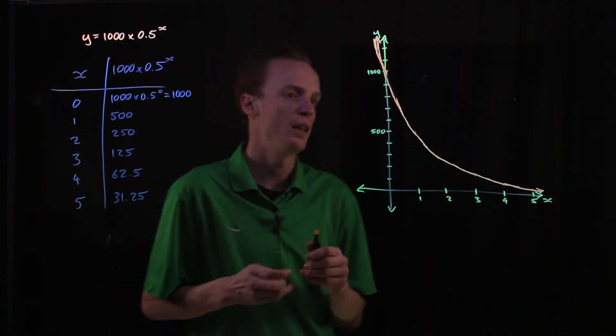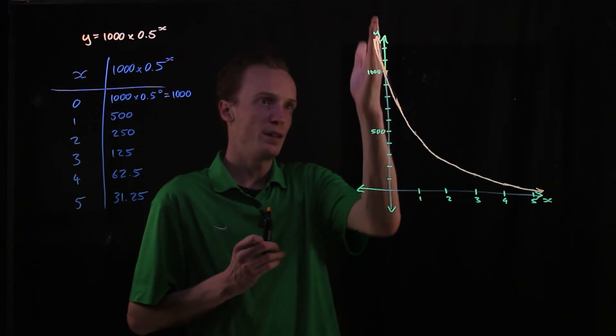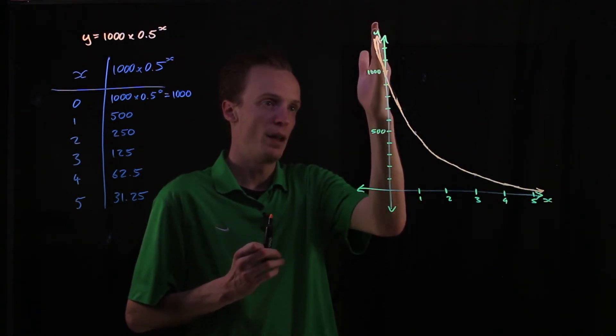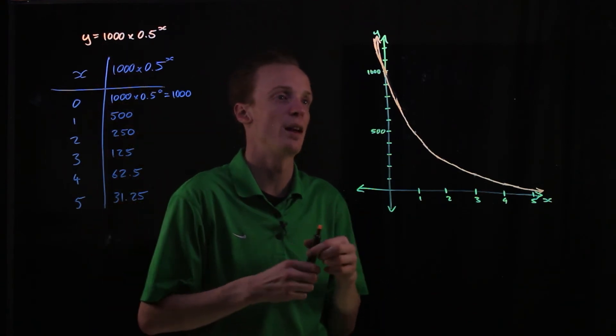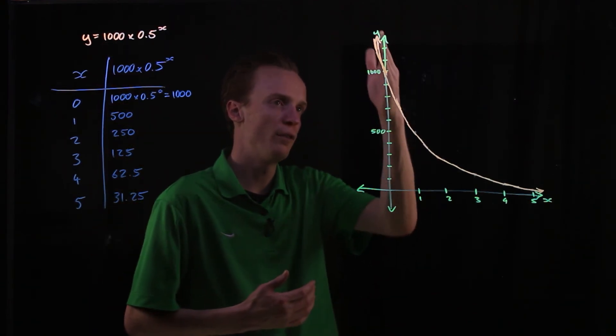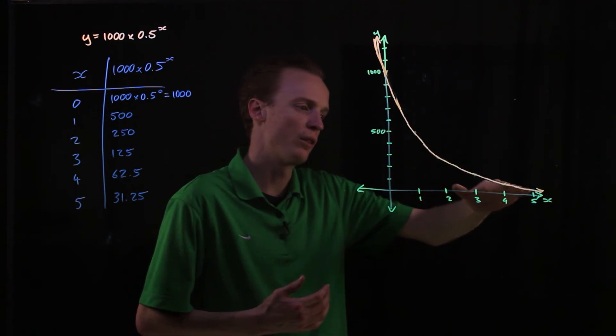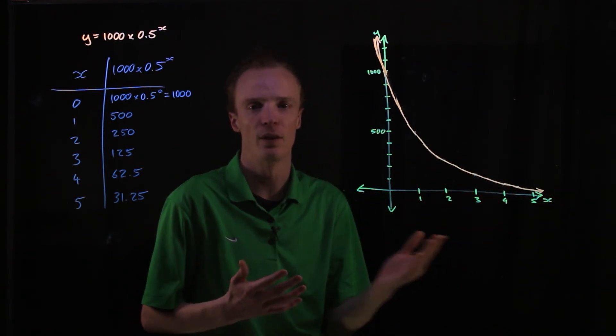What we can see here is it starts really steep and it cuts through the y axis at the value of a as it did last time. But the graph itself as we move along is flattening out closer and closer to this x axis.